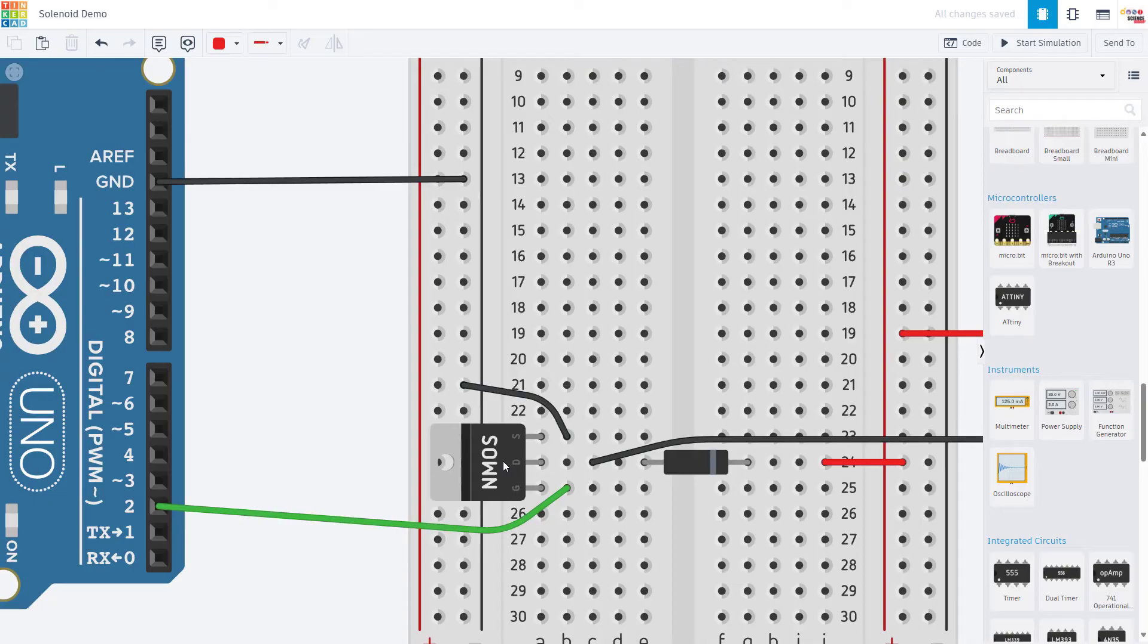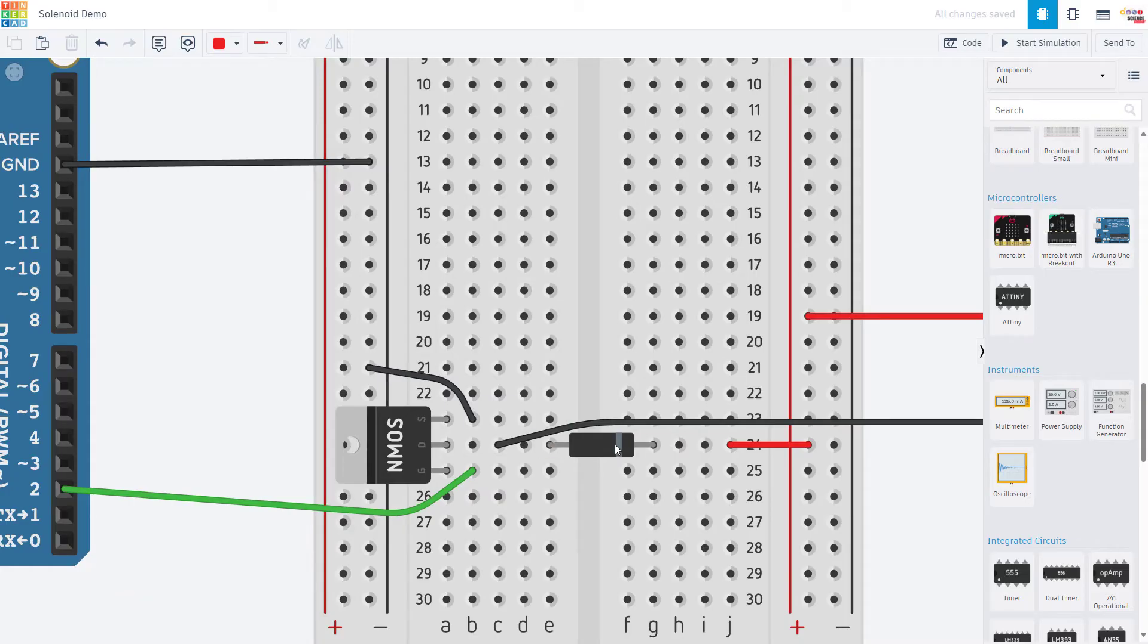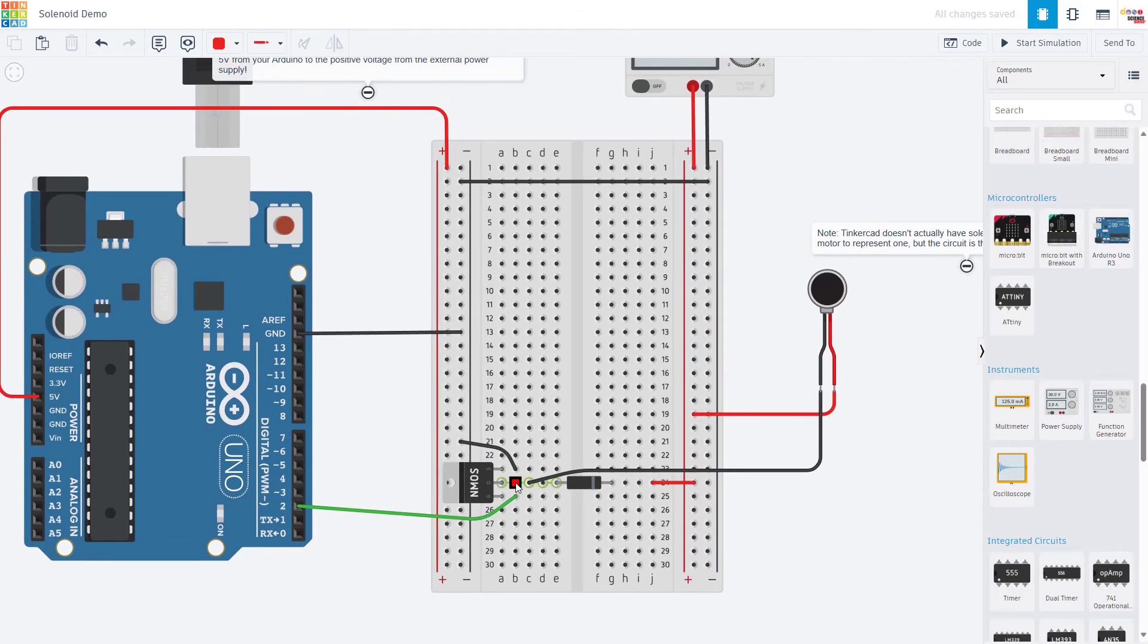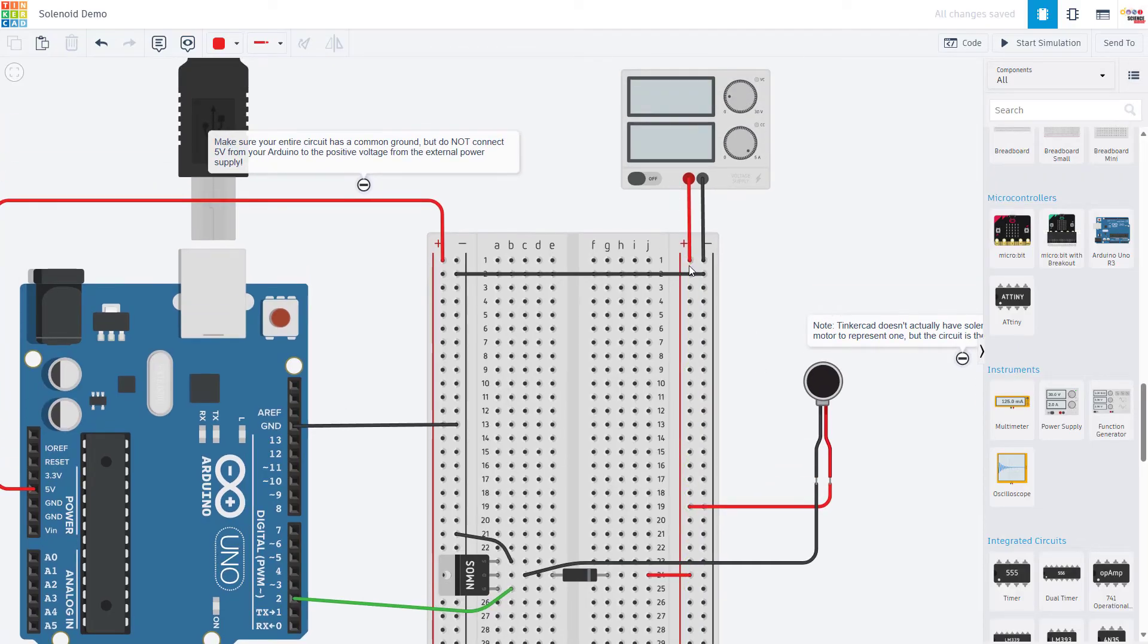Zooming in, we first have the MOSFET, which again has three pins, the gate, drain, and source. The gate pin is connected to Arduino pin 2. The source is connected to ground, which is in turn connected to ground on the Arduino. And the drain pin has a diode with the stripe facing toward the positive voltage from my external power supply. And the drain pin is also connected to the negative wire of the motor, or solenoid. The other wire of the motor, or solenoid, is also connected to the positive voltage from my external power supply, which you can see I have connected to the power bus here, with the negative wire from the power supply, also connected to ground, and a jumper wire going over to the other ground bus.